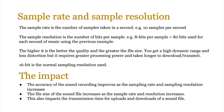The sample rate is the number of samples taken per second — for example, 10 samples per second. The sample resolution is the number of bits per sample — so those 10 samples might be stored at 8 or 16 bits. Using 10 samples per second at 8-bit resolution means 80 bits per second of audio. The higher the sample rate and resolution, the better the quality, but the greater the file size. With 16-bit samples, sound is more accurate, but the file is larger, you get high dynamic range, less distortion, and it requires greater processing power and takes longer to download or transmit.